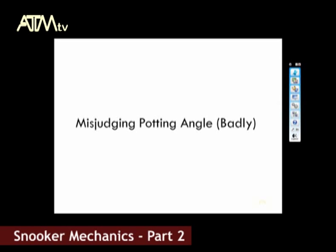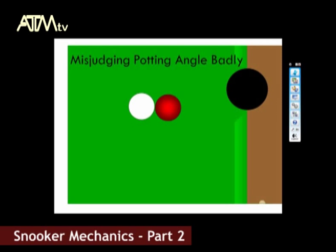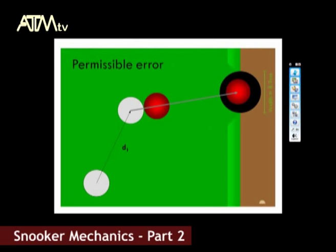But sometimes it is very easy to misjudge the potting angle badly. By looking at the situation geometrically, we are able to determine the permissible error. The current diagram shows a perfect pot where the object ball lands in the centre of the pocket. If we aim the cue ball along the pink arrow, the object ball would reach the edge of the pocket. As we can see, there is just under 2cm that we can negotiate. Our permissible error is the angle between the pink arrow and the black arrow, delta theta.